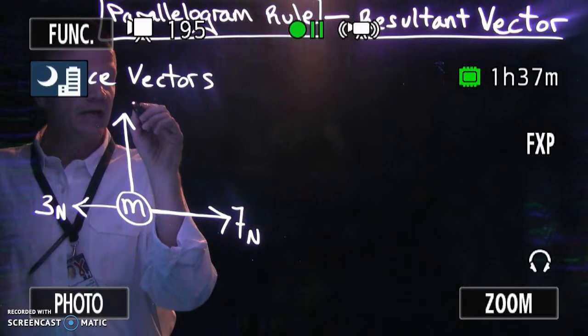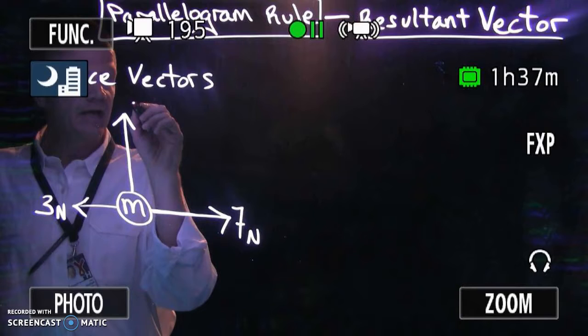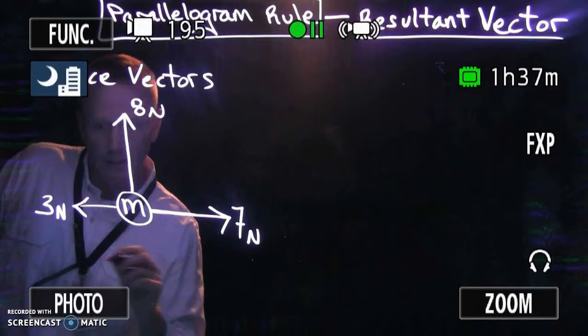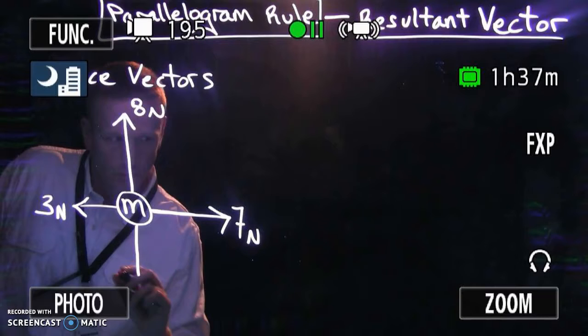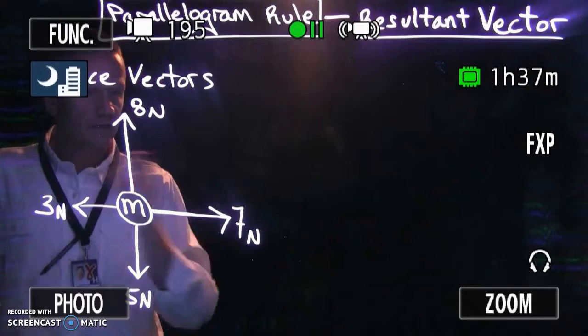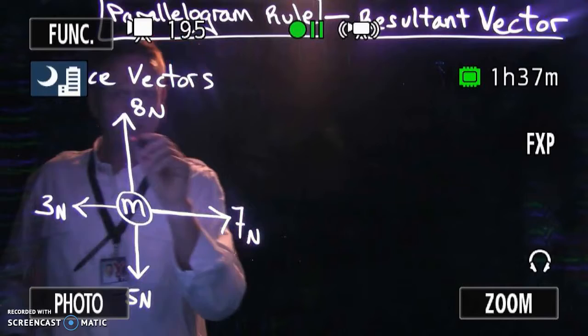Let's say you have 8 newtons of force pushing the mass up and 5 newtons of force pushing down. If you want to analyze all these forces and figure out the result, the net force, its magnitude and its direction, consider the horizontal forces first.